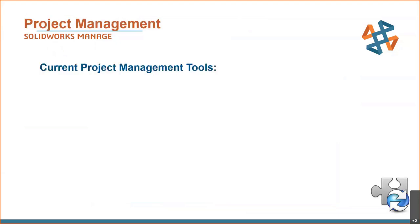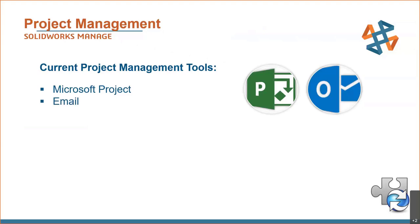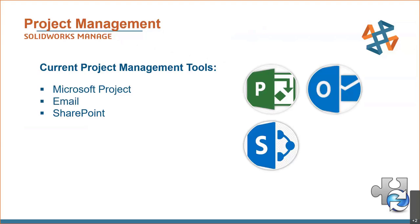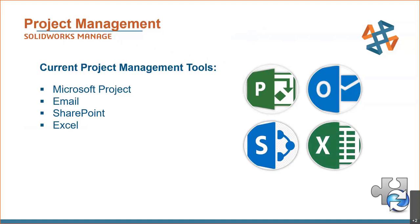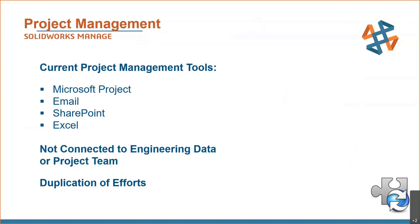When we look at current project management tools, folks tend to be in Microsoft Project for Gantt charts and tasks, Outlook for email notifications and scheduling, SharePoint to store things or run quasi-workflows, and Excel for bill of materials or task lists. These are all good tools, but they're not connected to our engineering data and not connected to our project team. What ends up happening is duplication of efforts and information getting messed up when it's transferred between systems.